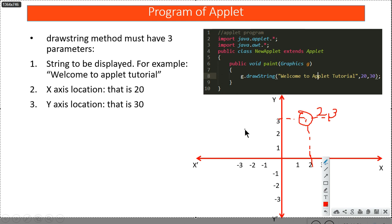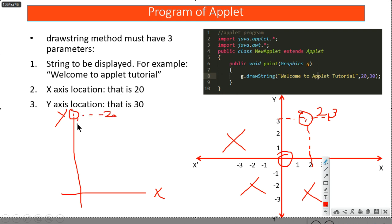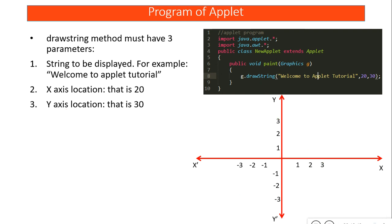So the applet works just like a graph with x-axis and y-axis location. The center of origin in a computer screen is the top-left corner. I specified (20, 30), so counting 20 from the left and 30 from the top, at that intersection the message 'Welcome to my Applet Tutorial' starts. Whenever you want to put something in your applet you have to specify the x-y location.